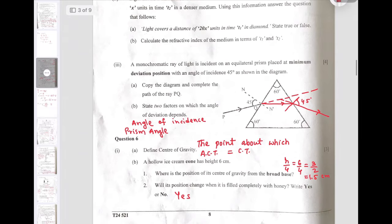Question 5 sub-question 3: Monochromatic ray of light is incident on equilateral glass prism placed at minimum deviation position with angle of incidence 45 degree as shown. Copy the diagram and complete the path of the ray. I have completed the diagram here. State two factors on which the angle of deviation depends. Any two factors you can write: I have written angle of incidence and prism angle.